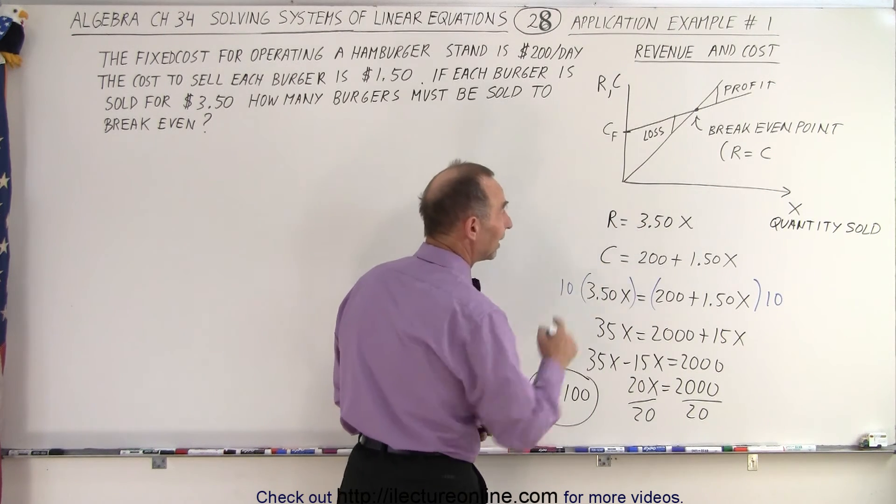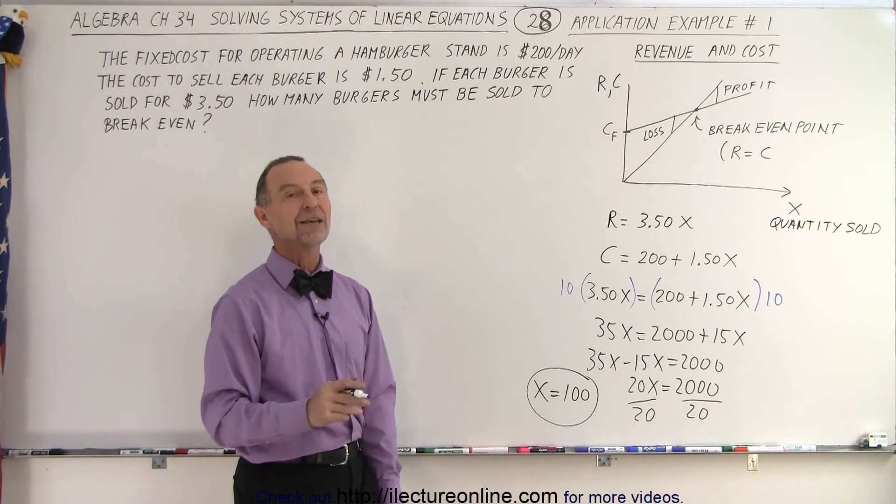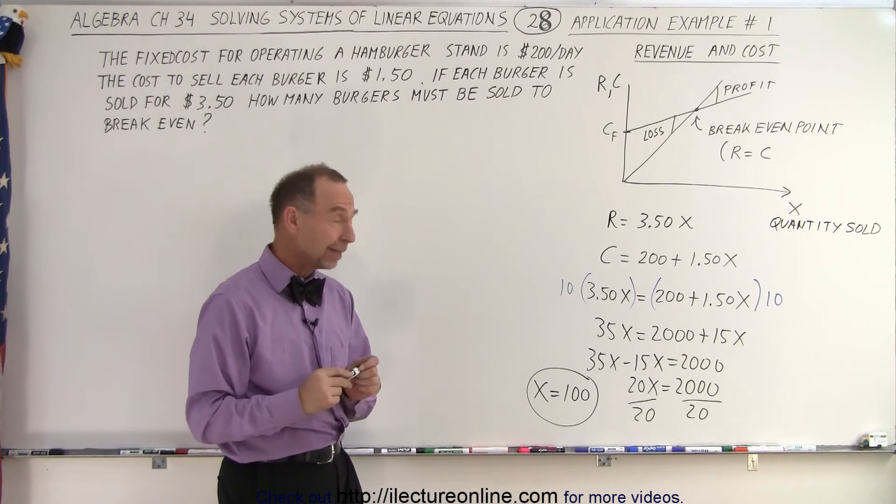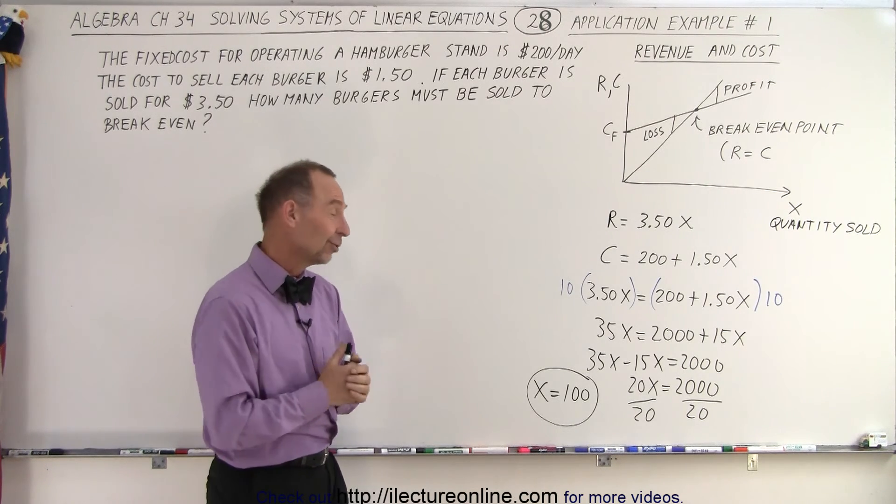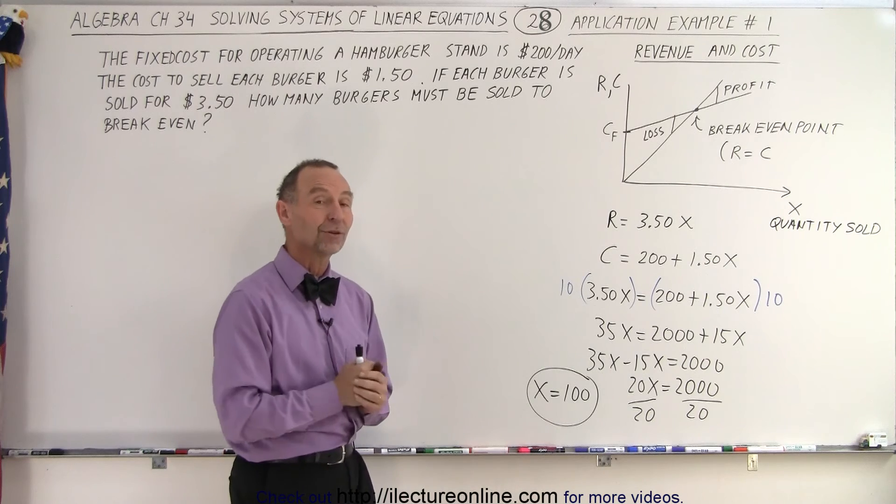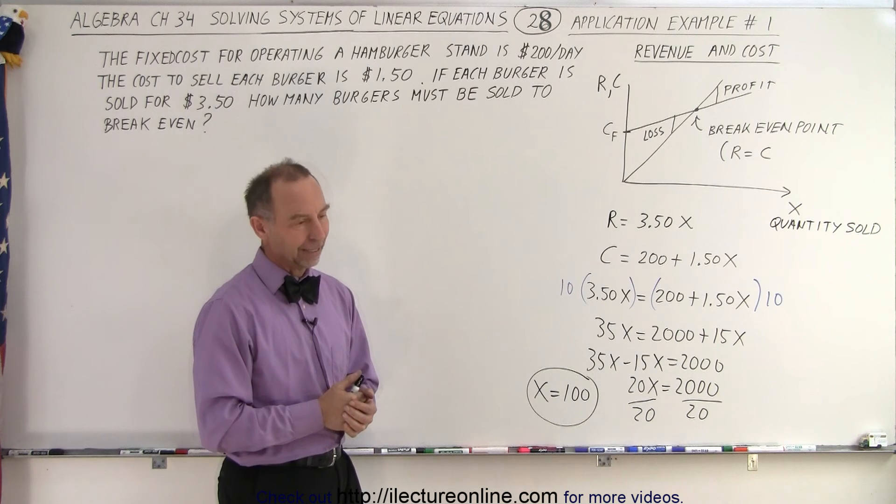So 100, that's the quantity sold. When we sell 100 burgers a day, we break even. It's not a good place to be at because you don't make any money, but at least you're not losing money either. So you need to sell more than 100 burgers a day in order to make a profit. And that is how it's done.